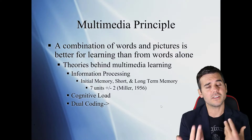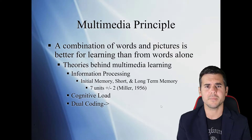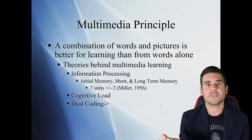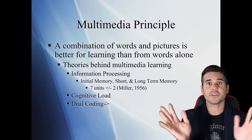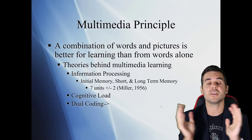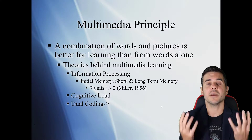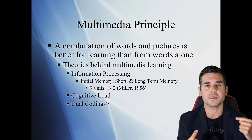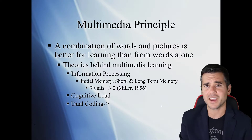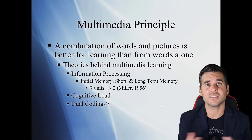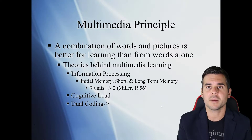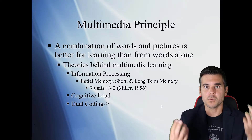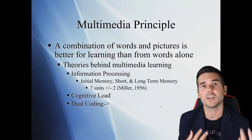Let's talk about some of the theories behind multimedia learning. First, we start with information processing. Information processing basically says that when we receive information, our brain decides: are we going to do something with this? Is this an image? Is this text? Is this narration? Are we just forgetting this — is this not important? Then it goes into our short-term memory, and from there we decide what we're going to do: are we working with this, are we going to remember it and store it in our long-term memory?